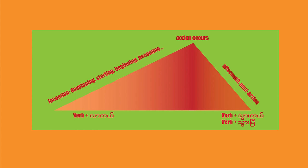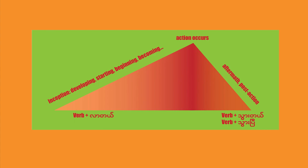Because the construction verb followed by la bi puts the emphasis on the developing, beginning, or inception phase of an action, it's highly unusual to use it with instantaneous actions — events that occur in a flash, all at once. For example, thaye is 'to die' or 'to pass away.' Burmese speakers usually don't say thaye la bi, because it gives the impression that the person's death is occurring in slow motion and you can see it starting to happen and trace it. There are ways to say 'dying' or 'about to die,' but that's for a different lesson.